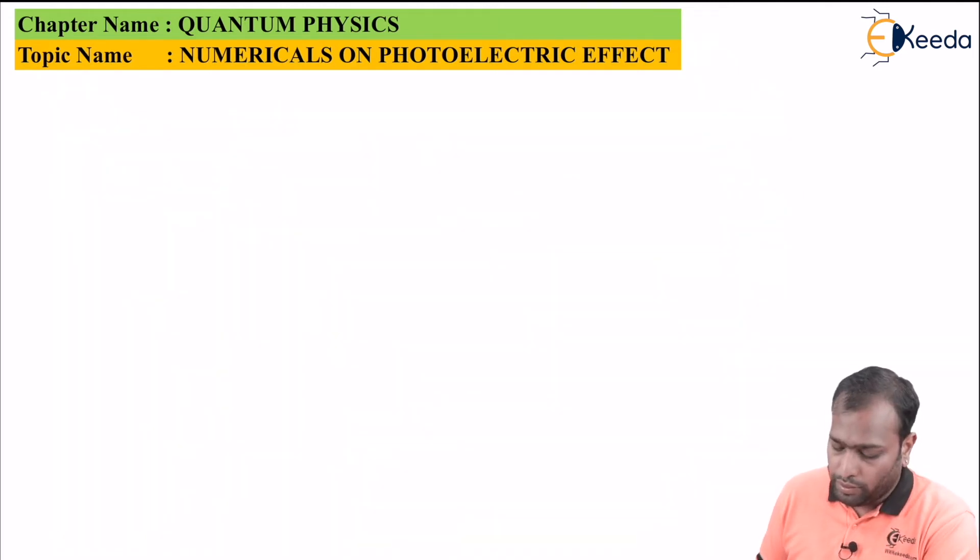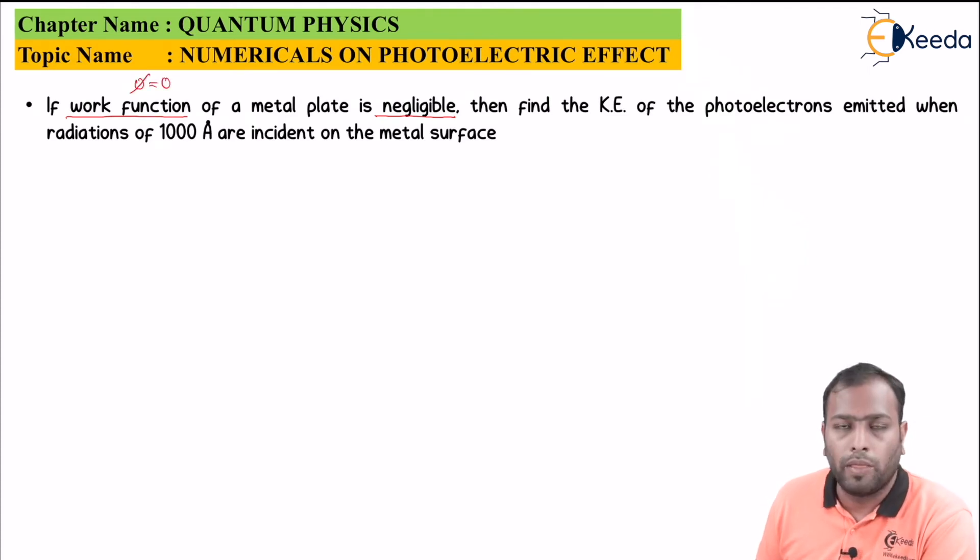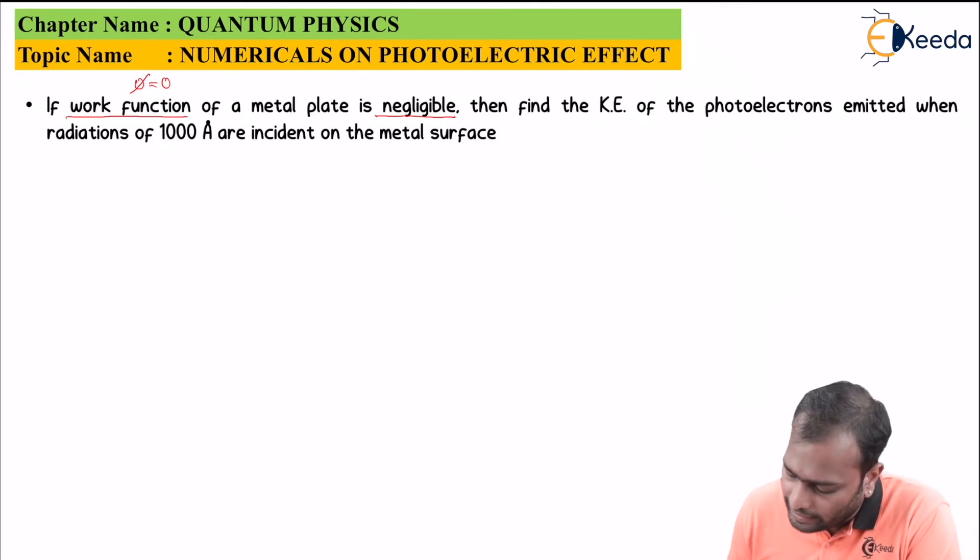It reads out if the work function of the metal plate is negligible. Now work function which is phi is negligible means phi is zero for this example. Now ideally phi should not be zero but practically it is not zero but in this question we have considered phi to be zero. Find the kinetic energy or the KE of the photoelectrons emitted when radiations of 1000 angstrom are incident on the metal surface.